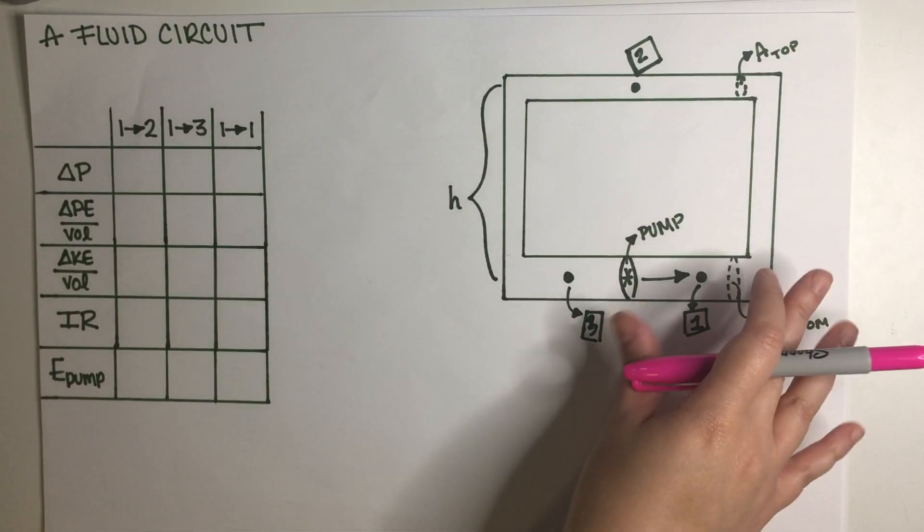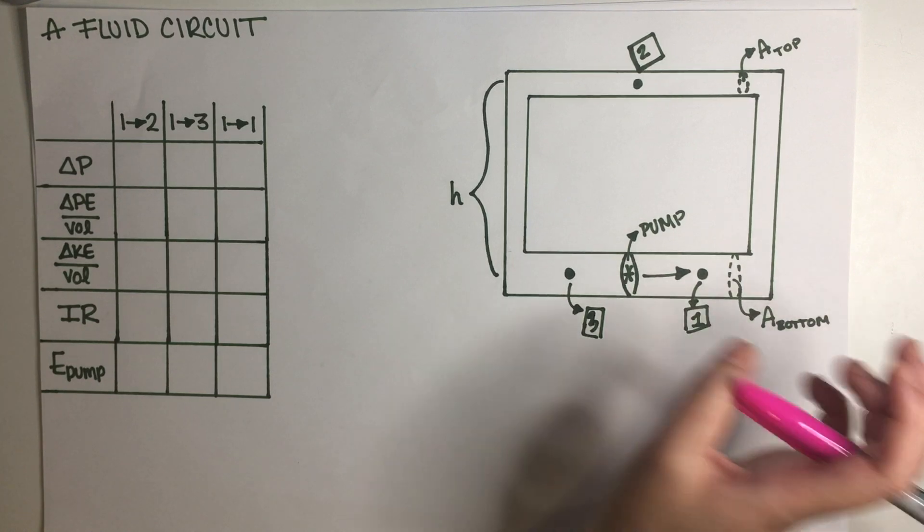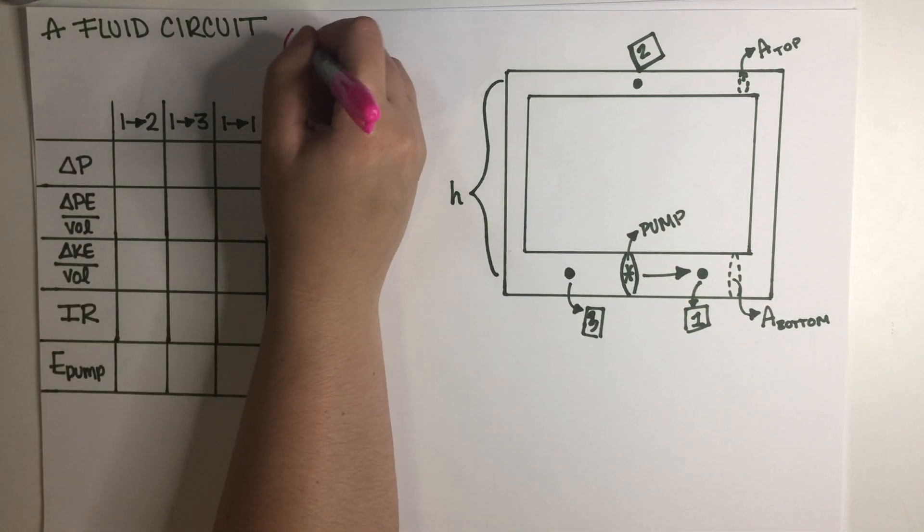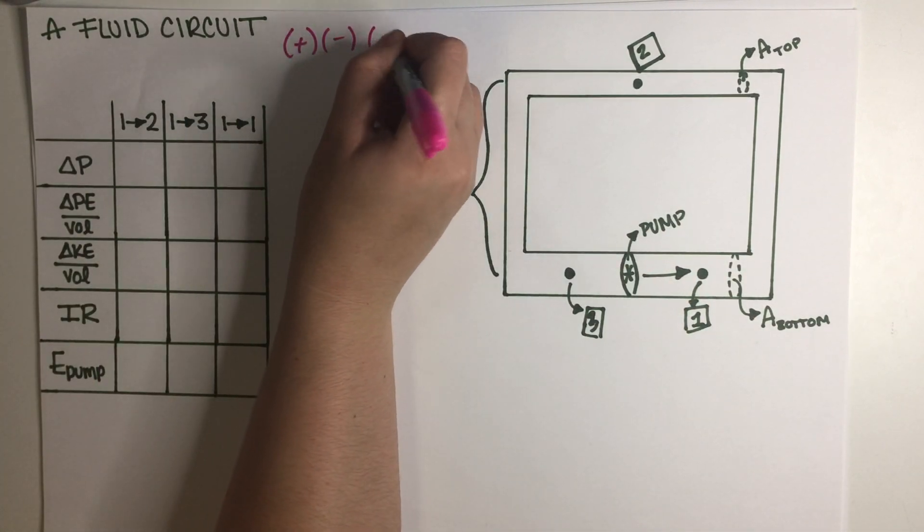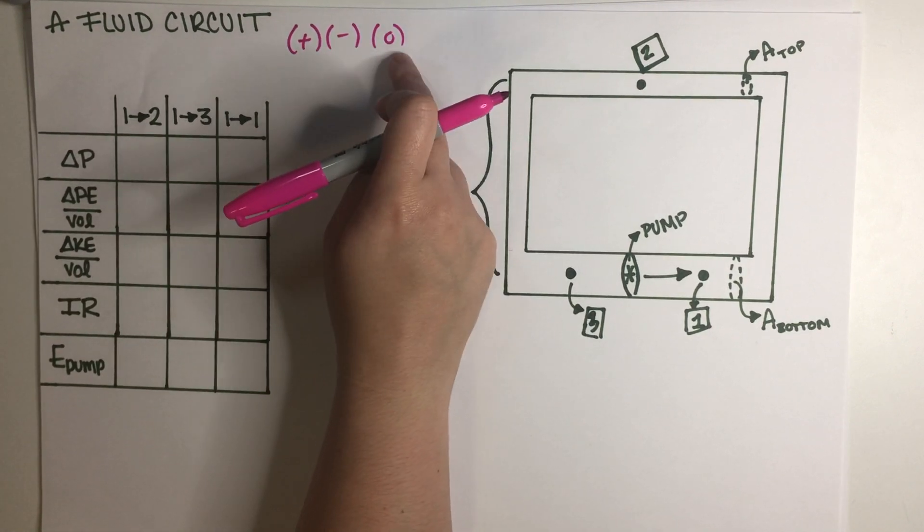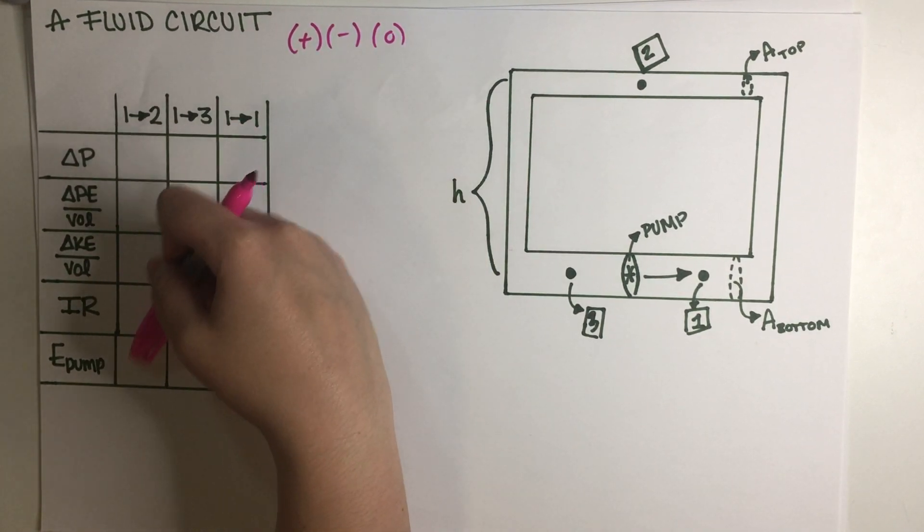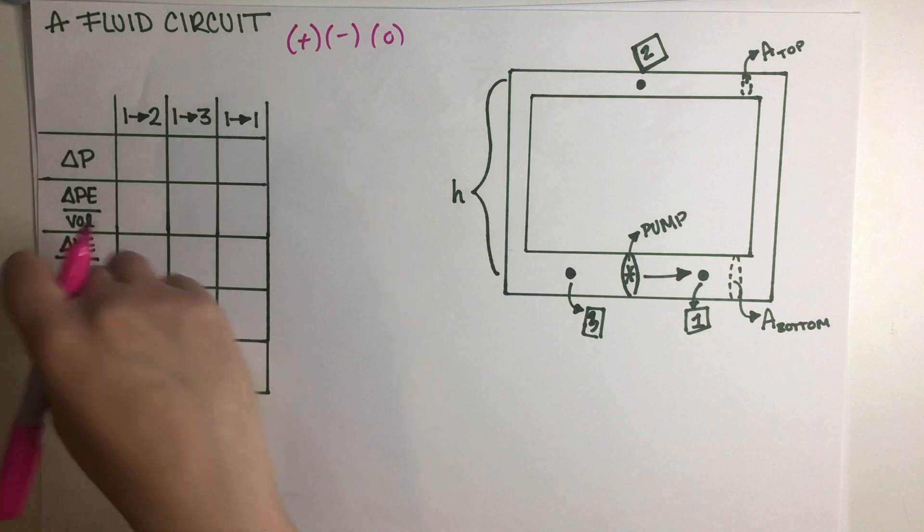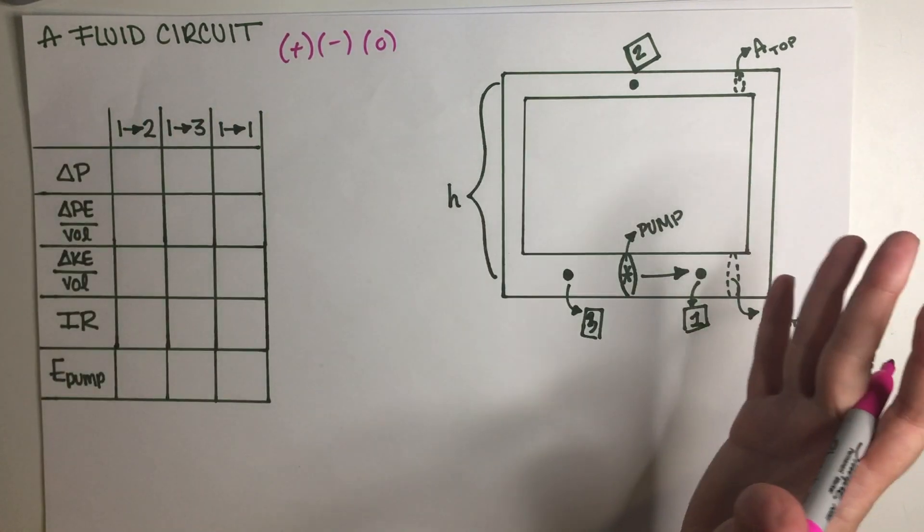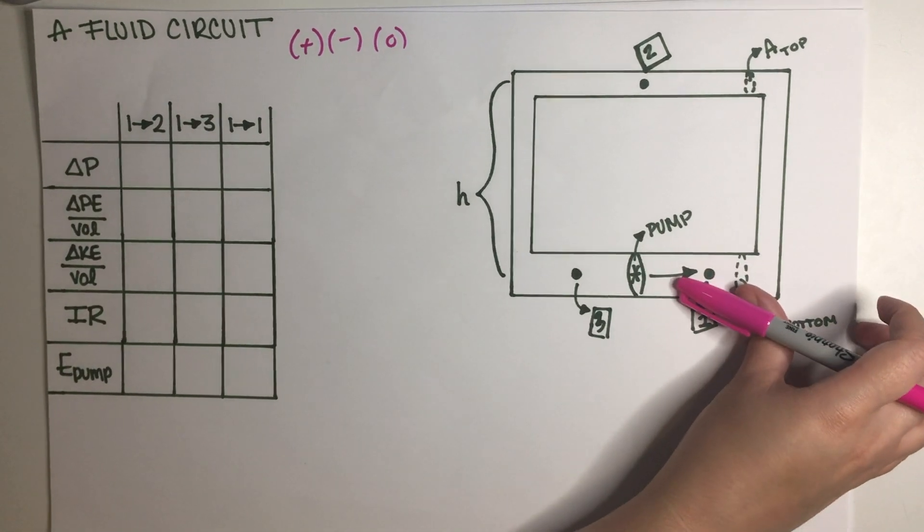This is simple in terms of the instructions. All we have to do is say plus, minus, or zero. Those are our three options and we need to fill in this chart over here. So let's just go ahead and do that.